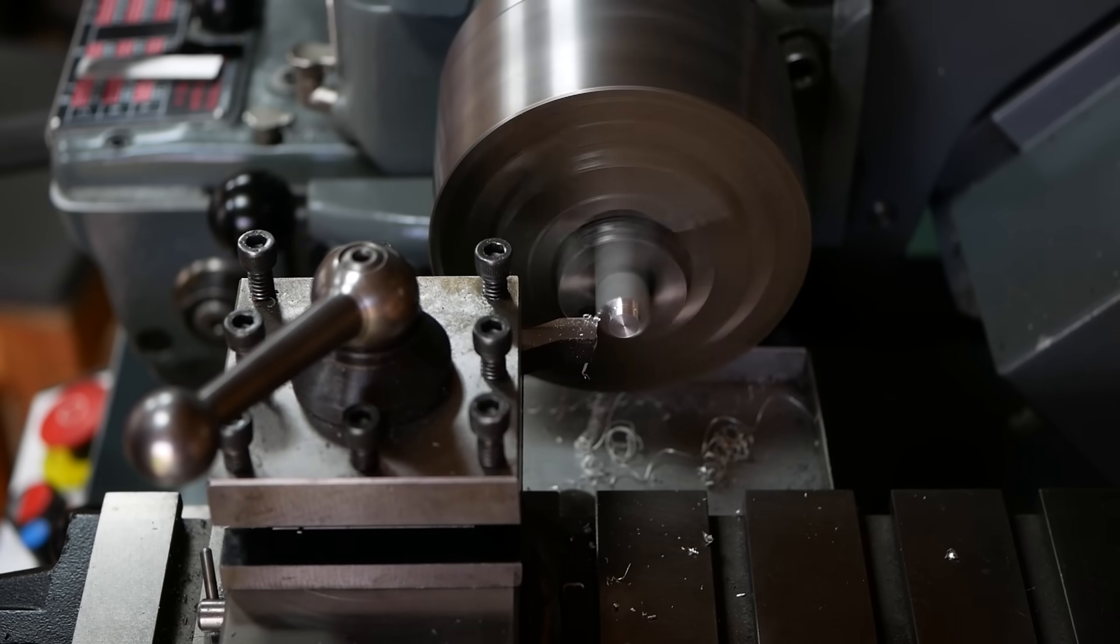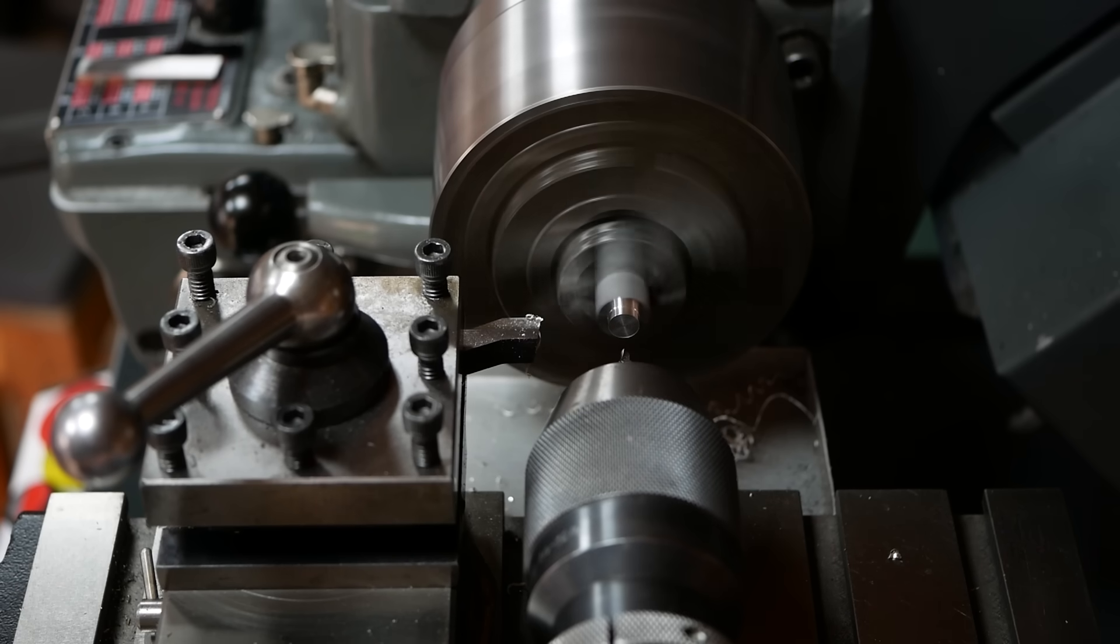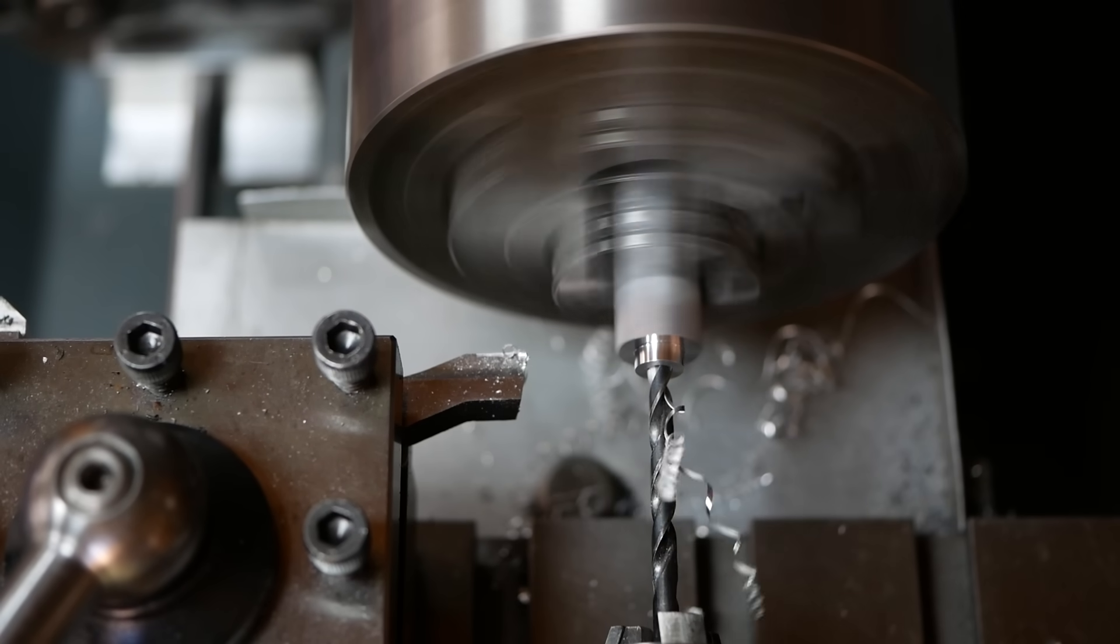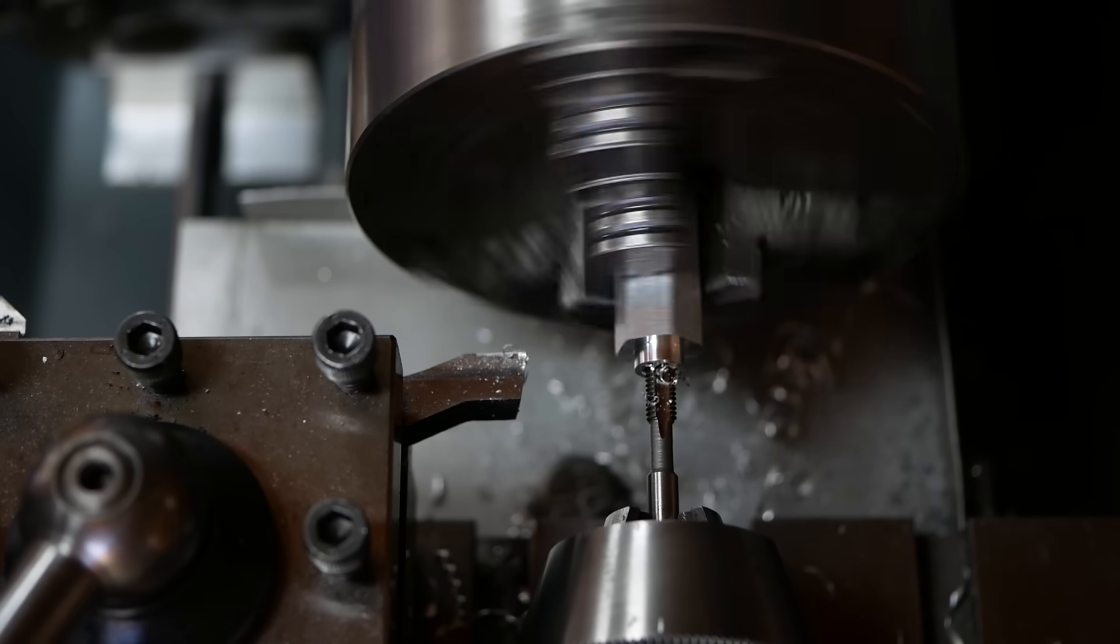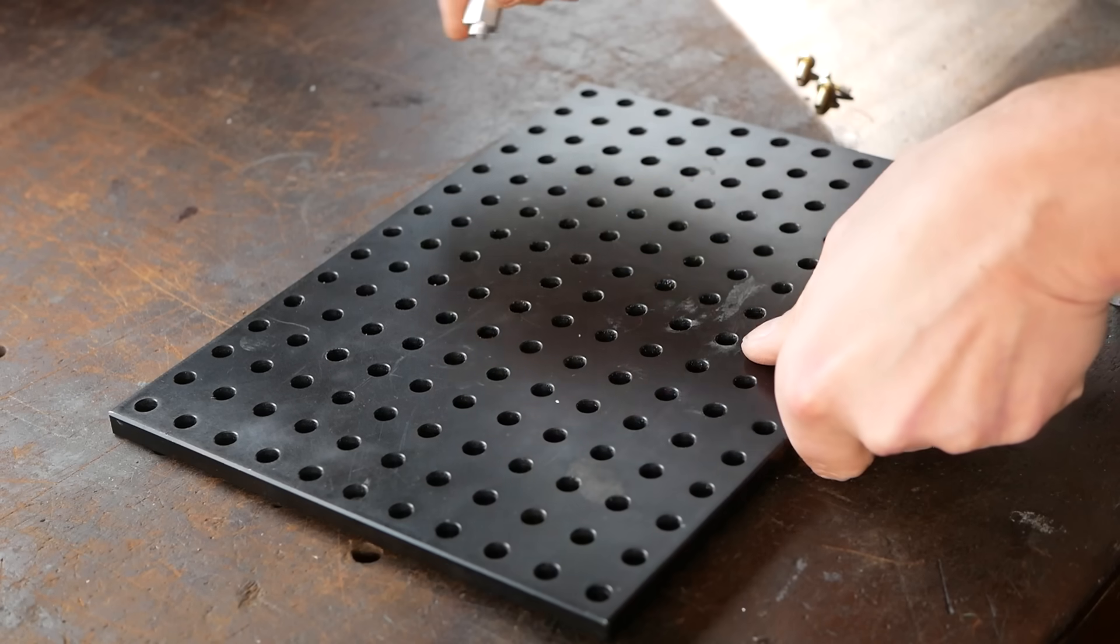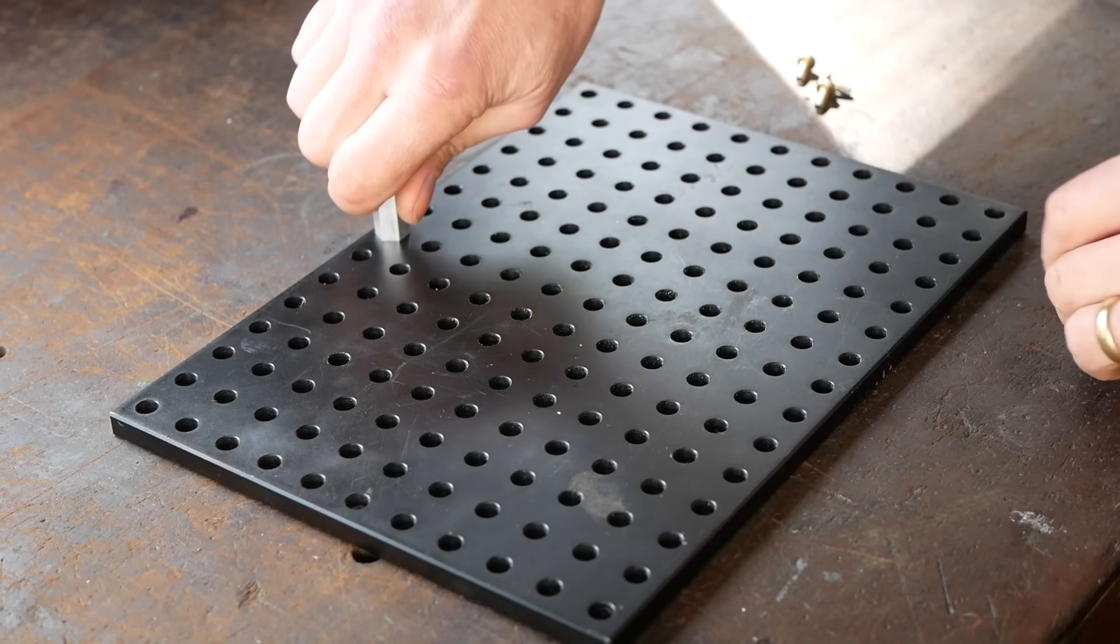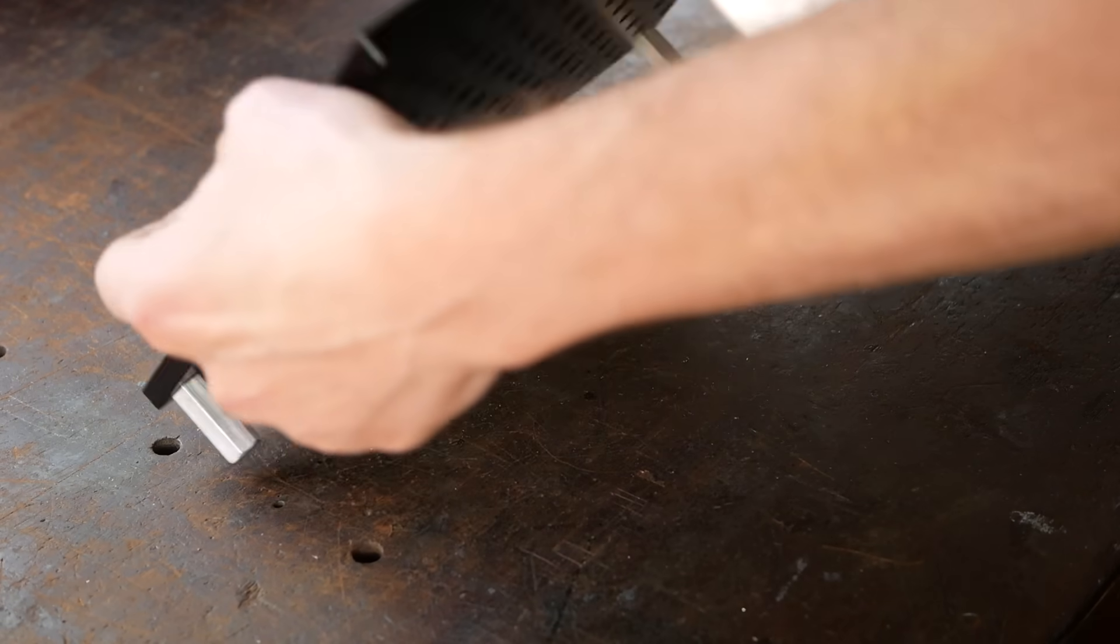First, Alistair machined some feet to raise an optical breadboard off the bench. The optical breadboard forms an excellent base to bolt the micrometer stages to, and raising it off the bench allows the microscope base to slot beneath it.